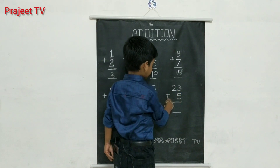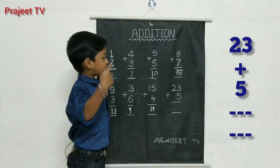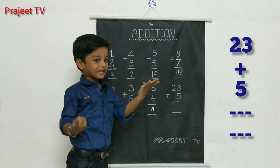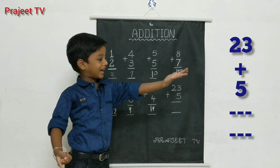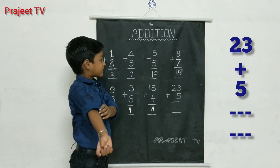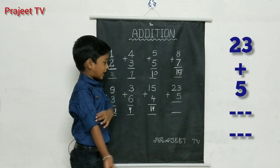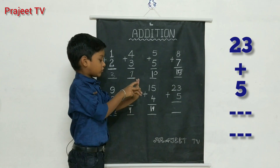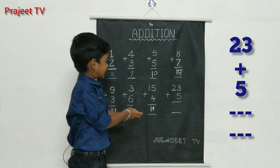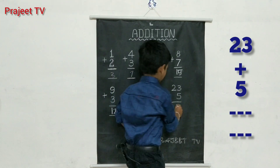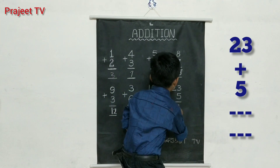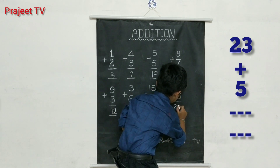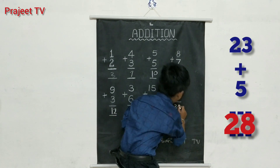Twenty-three plus five. Twenty-three in the mind, five in the fingers. Twenty-three after twenty-four, twenty-five, twenty-six, twenty-seven, twenty-eight. Answer: twenty-eight.